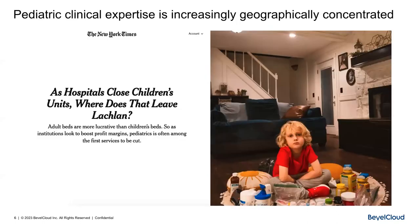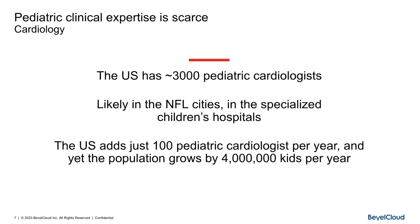A second point: clinical expertise in pediatrics is increasingly geographically concentrated. This is from an article in the New York Times about six months ago — lots of adult hospitals and regional hospitals are closing out children's beds in favor of adult beds. There are only 500 specialized children's hospitals in the world, and about 250 of them are in the US. Even in the US, we only have about 3,000 pediatric cardiologists, likely all in NFL cities and major metros, and we only add about 100 per year while our population grows by about 4 million kids.